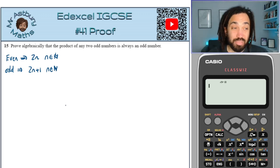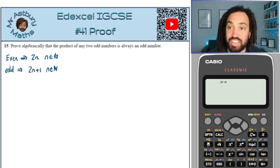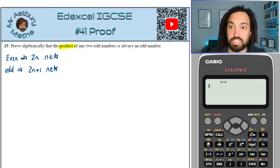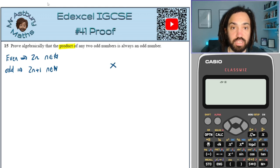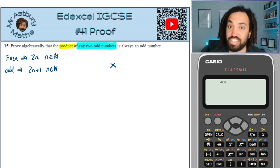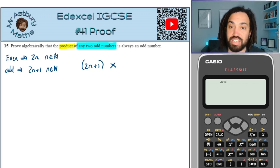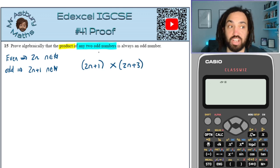So if we keep in mind that whenever we see the word 'even' we need to write it as 2n, and 'odd' as 2n plus 1. Then we have to really read the question word for word. 'Product' means multiply. And this is what catches a lot of people out — it says any 2 odd numbers. The first one we're going to use is 2n plus 1, and then a lot of people make the mistake of writing 2n plus 3 as another odd number.